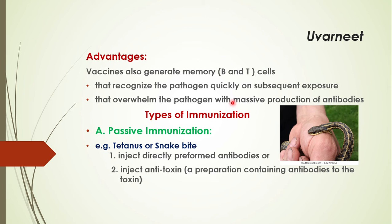Next we look at types of immunization — specifically passive immunization. Take the example of tetanus or snake bite. Tetanus is caused by Clostridium tetani, a bacterium; snake bite involves venom produced by the snake. If you directly inject preformed antibodies or anti-toxin — a preparation containing antibodies to the toxin — this is called the passive immunization method.